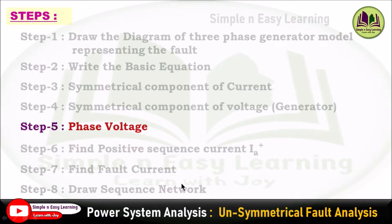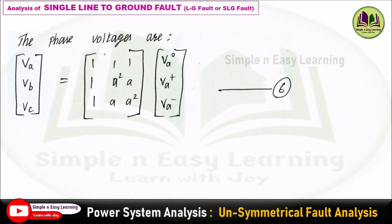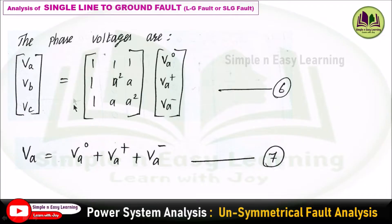Step 5 — consider the phase voltages. The phase voltages va, vb, and vc equal the transformation matrix T multiplied by va0, va+, and va−. Since the fault occurs at phase a, we consider only the faulted phase: va = va0 + va+ + va−. There is no need for vb and vc expressions. This is equation 7.